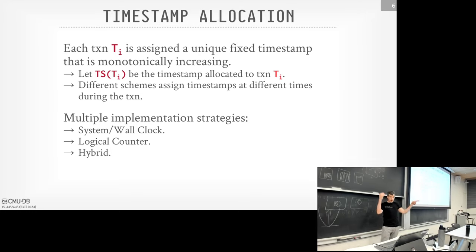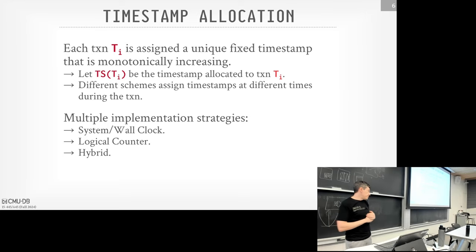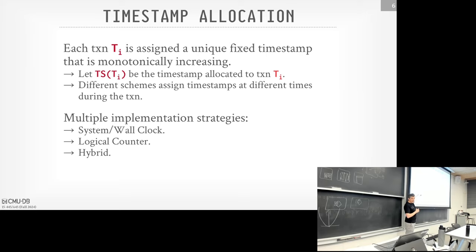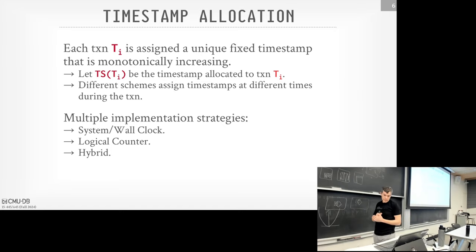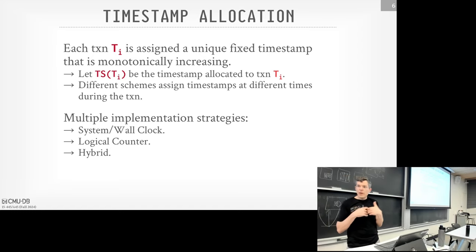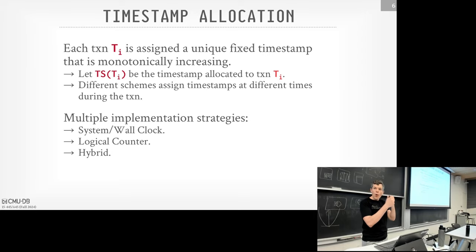Spanner actually uses wall clock time backed by atomic clocks in every rack and GPS receivers on the roof, so they can guarantee all their clocks are in sync across the world. But most systems don't work like that. The main thing here is: assume there will be some integer corresponding to the timestamp of a transaction. How we get it doesn't matter, but it always has to be marching forward in time, and we won't worry about wraparound.